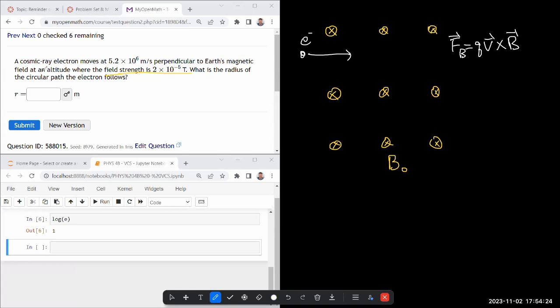Perpendicular altitude where field strength is there. What is the radius of the circular path the electron follows? So it will undergo a circular path due to the magnetic field.